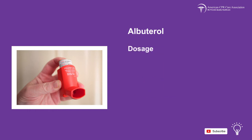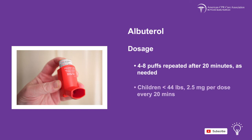The dosage of albuterol is as follows: 4–8 puffs to be repeated after 20 minutes as needed. For children under 44 lbs, 2.5 mg per dose every 20 minutes, and for children over 44 lbs, 5 mg per dose every 20 minutes.